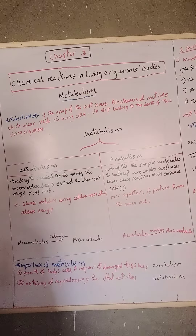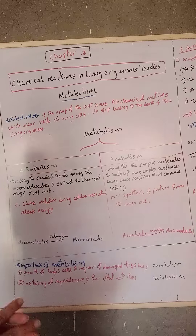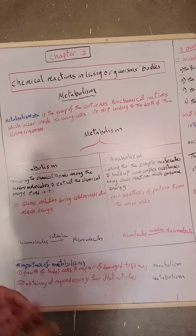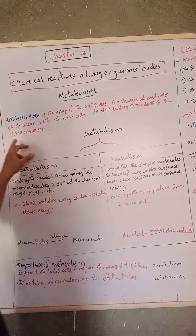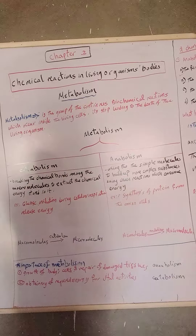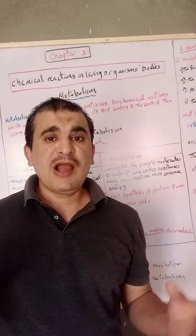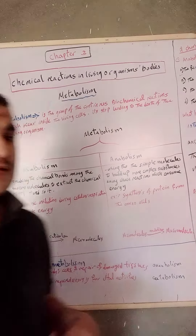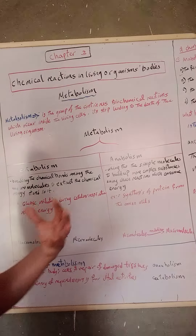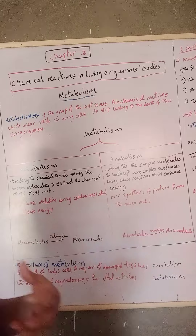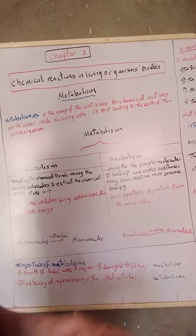What is metabolism? Metabolism is the group of continuous biochemical reactions which occur inside the living cells. If it stops, it leads to the death of the living organism.